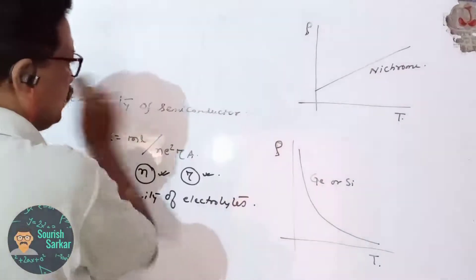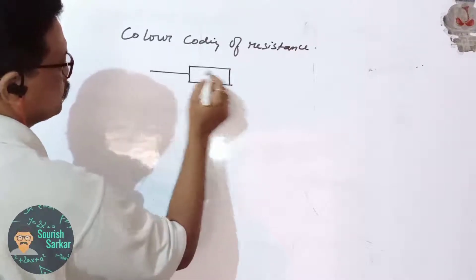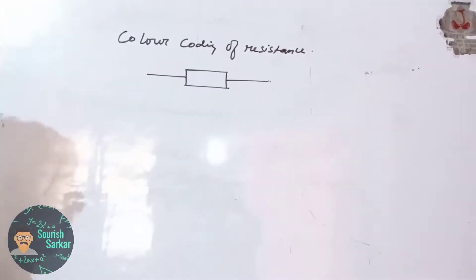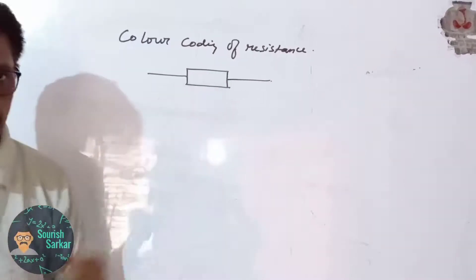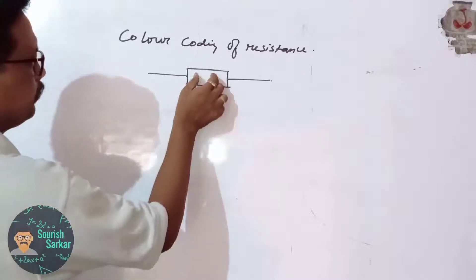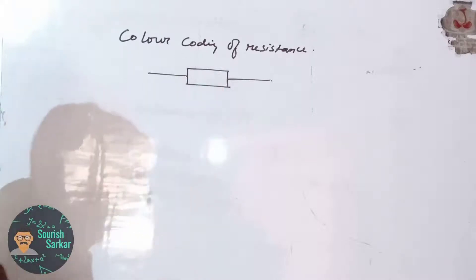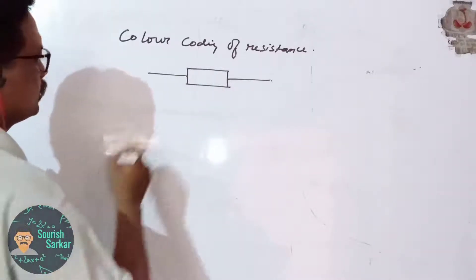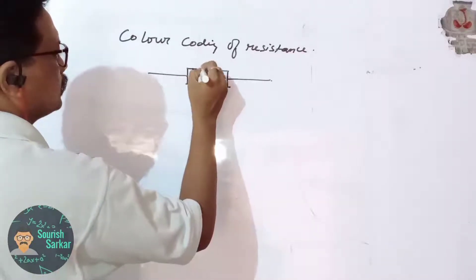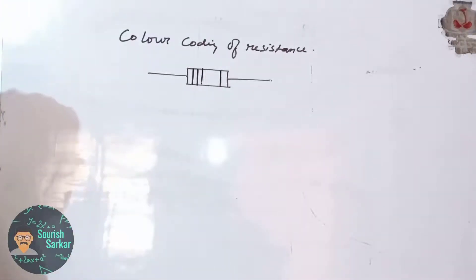Now let us understand color coding of resistance. Resistances available in the market that we use in various electrical and electronic circuits are very small, and it is very difficult to write the value — which varies over a wide range — on the body of the resistor, so we use color coding. We use three different colored rings, and there is a fourth ring that may or may not be present.